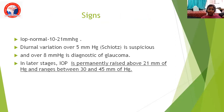Coming to the signs: there are three — intraocular pressure, optic disc changes, and visual field changes. Normal intraocular pressure is 10 to 21 millimeters of mercury. Whenever there is a diurnal variation of over 5 millimeters of mercury between morning and evening readings, it is suspicious. A difference of over 8 millimeters of mercury is diagnostic of glaucoma. In later stages, IOP is permanently raised above 21 mmHg and ranges between 30 to 45 millimeters of mercury.